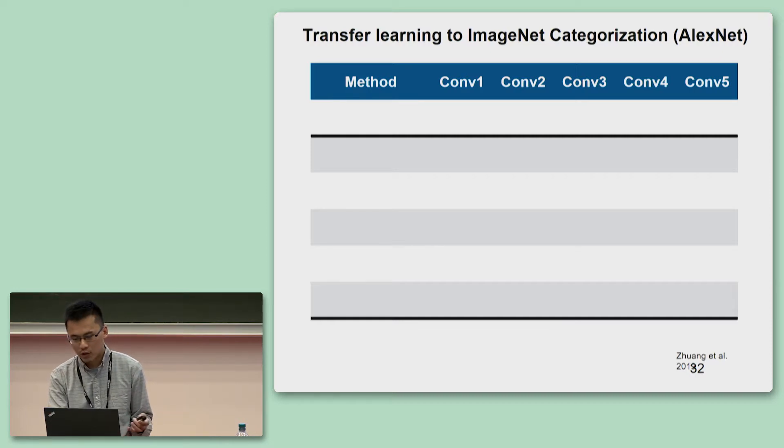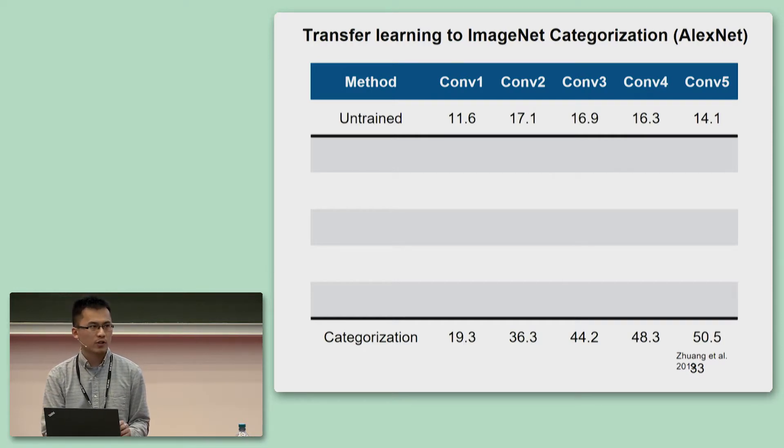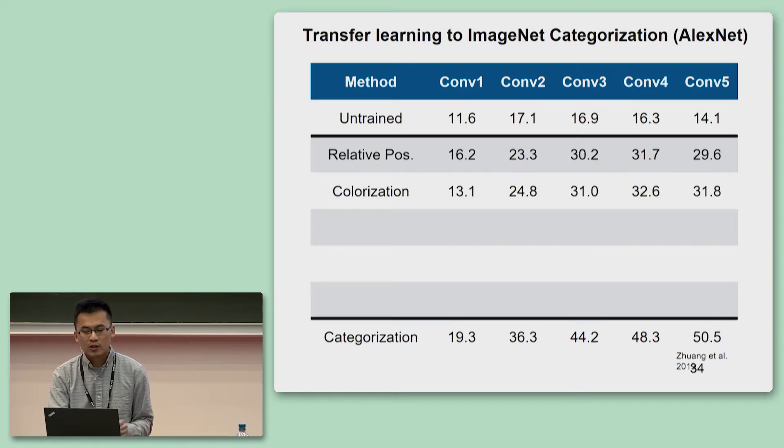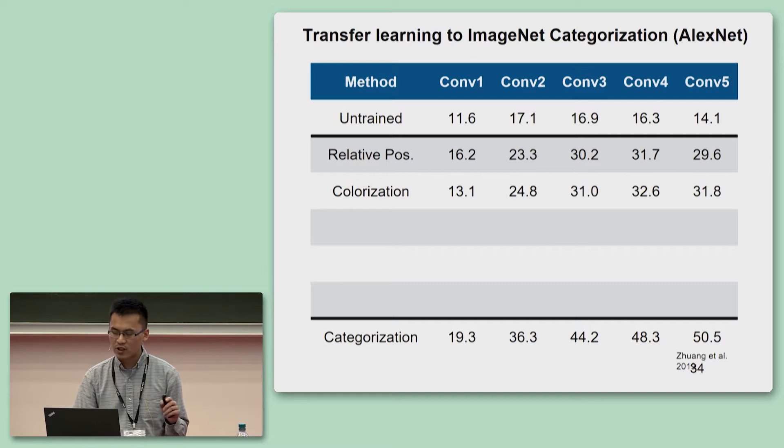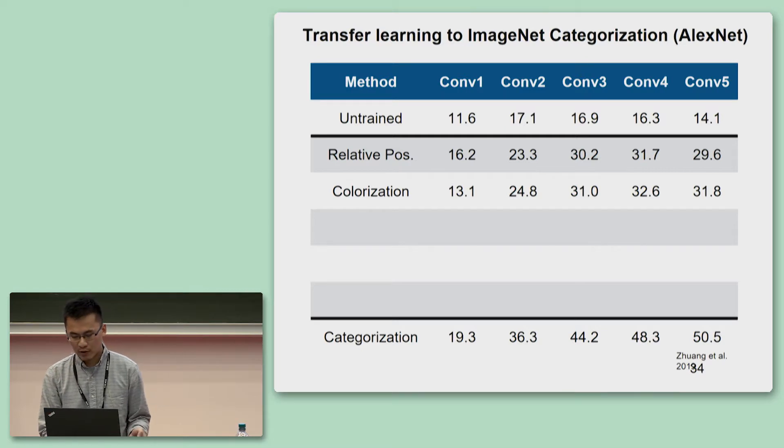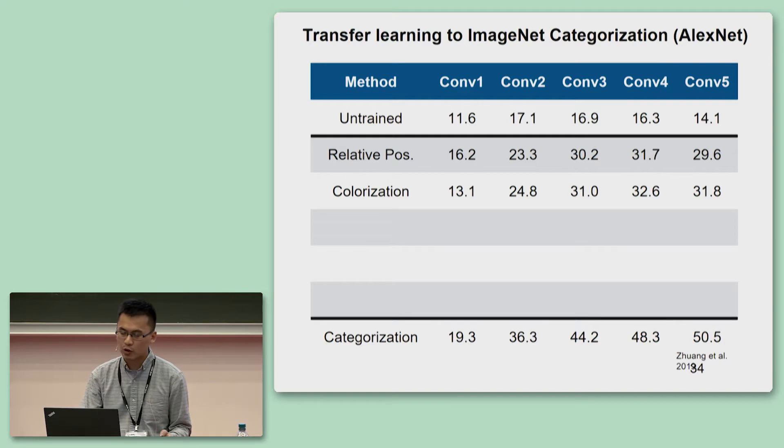To test how useful the learned features from this task are, we use a pipeline that is widely used in AI researchers. More specifically, we first train an AlexNet using the self-supervised tasks on ImageNet, and then we fix the trained weights, add an additional classifier and only train that classifier for ImageNet categorization using features extracted from different layers. So we first show the performance of the untrained networks and the categorization-trained networks as the lower bound and the upper bound for this performance. Relative position and the colorization tasks are both much better than the untrained networks, but are still significantly worse than the categorization networks. We don't show depth prediction result here because this task can only be trained on synthetic datasets with depth information available.